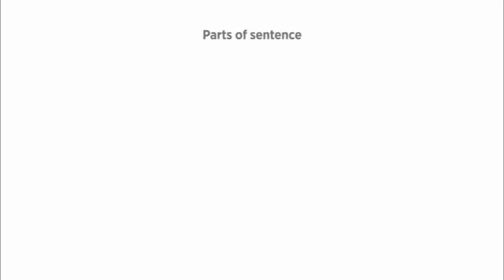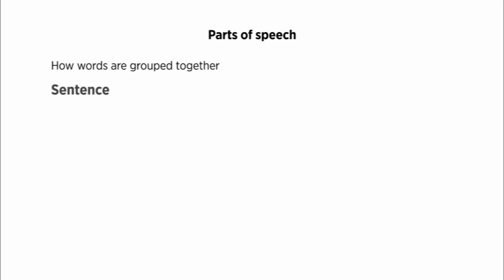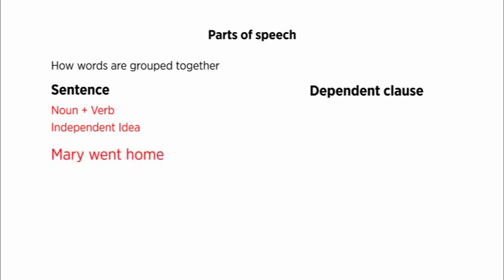Now parts of a sentence are a little bit different. These involve seeing how words are grouped together. Let's take a look at two different groups of words: a sentence and a dependent clause. A sentence is a group of words with a noun and a verb that can stand by itself as an independent idea. You already know what a noun and a verb are, so this should be pretty easy. Mary went home — we have a noun, Mary, and a verb, went, and those words can stand by themselves as an independent idea.